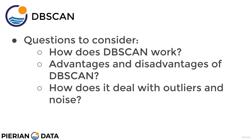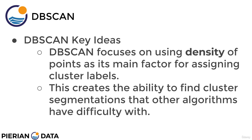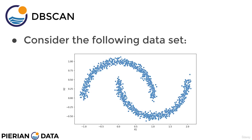So what are the questions we want to consider as we learn about DBSCAN? We first need to understand how DBSCAN works, then understand its advantages and disadvantages — in particular how it deals with outliers and noise, since the term noise is actually within the name of DBSCAN. The key idea is that DBSCAN focuses on density of points as its main factor for assigning cluster labels, creating the ability to find cluster segmentations that other algorithms have great difficulty with.